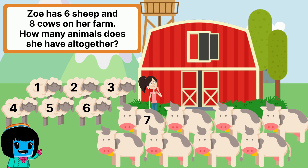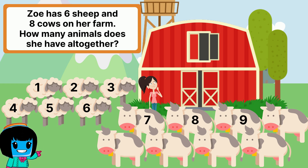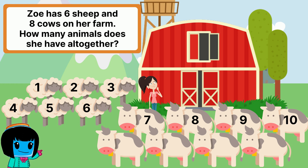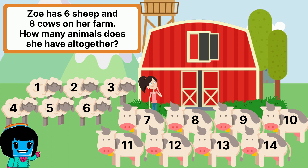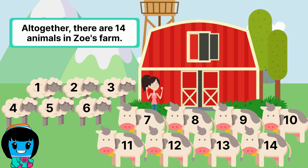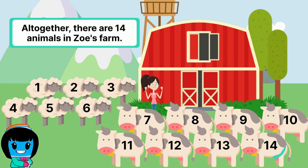Seven, eight, nine, ten, eleven, twelve, thirteen, fourteen. All together, there are fourteen animals on Zoe's farm.